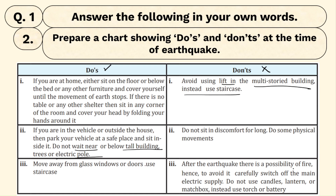After the earthquake there is a possibility of fire, hence carefully switch off the main electric switch. The main switch should be switched off at the time of earthquake because fire can start due to current. Also, do not use candles, lanterns, or matchboxes at the time of earthquake.